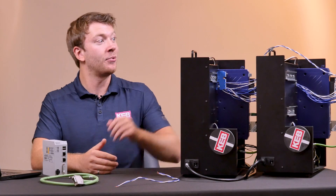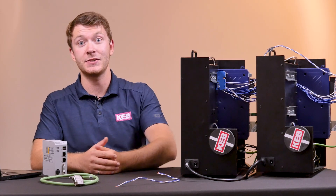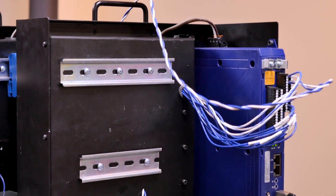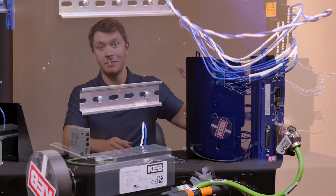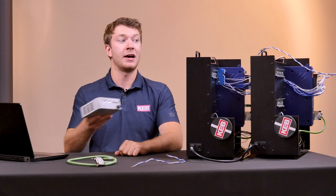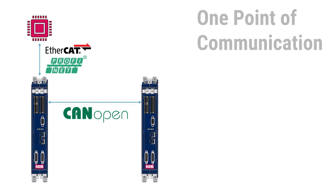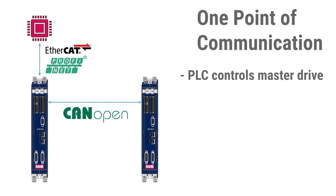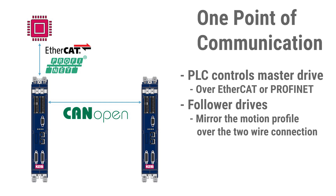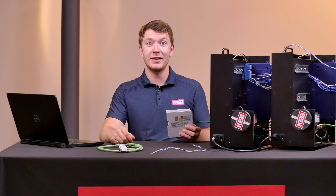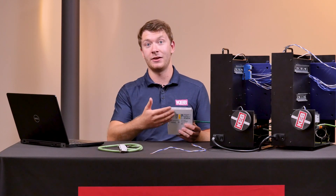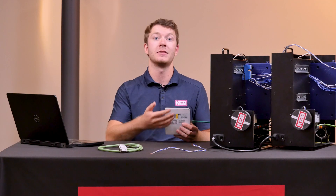CAN cross-communication can operate as its own independent field bus, but it also doesn't have to. Two drives can communicate with each other over CAN cross-communication while a PLC talks to the master drive over EtherCAT or PROFINET. The PLC can then control the master drive over this link, enabling a more sophisticated motion profile, and the follower drives mirror that motion profile over just the two-wire link. This allows several tasks that would otherwise be handled by a PLC to be offloaded to the drives.